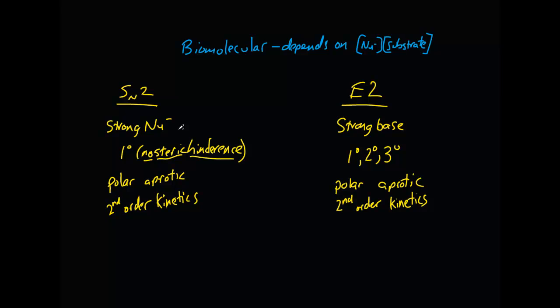SN2 is determined by a strong nucleophile, occurs primarily on a primary carbon where there is very little steric hindrance from surrounding interfering groups. It also occurs in polar aprotic solvent, whereas E2 occurs in the presence of a strong base on a primary, secondary, tertiary carbon, also in polar aprotic solvents.